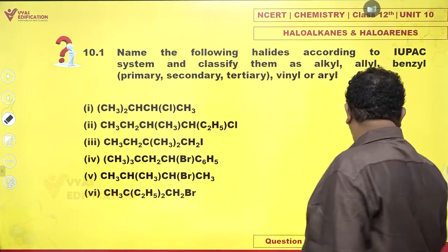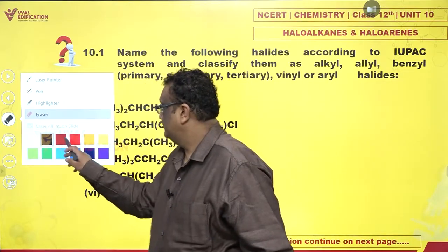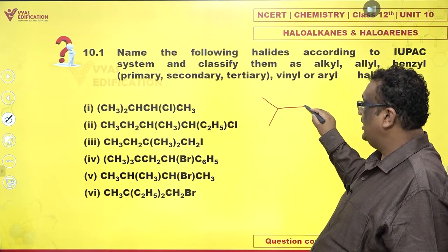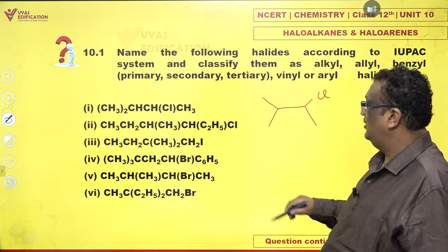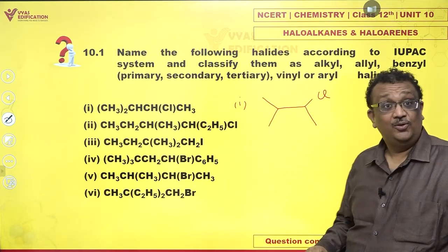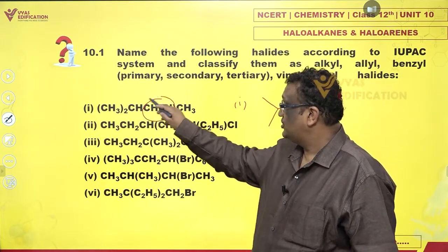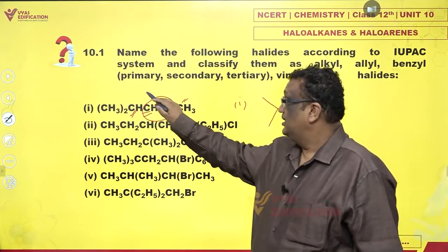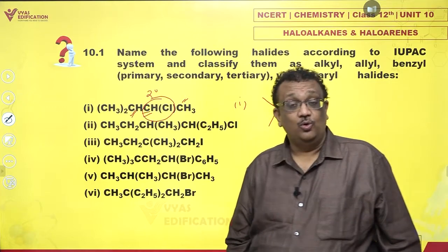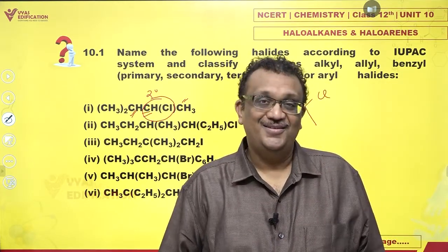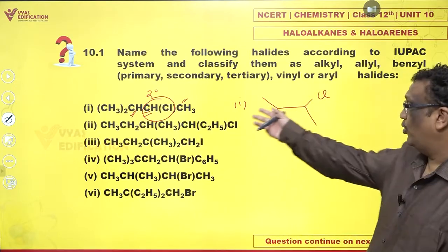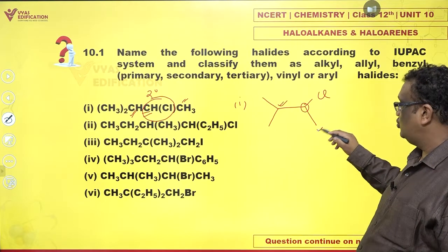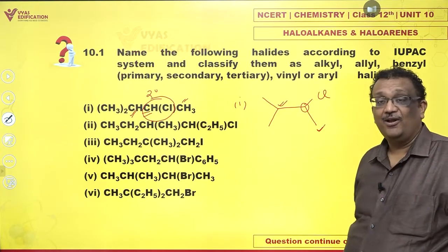Let us take a look at the very first one. We have (CH3)2CH-CH(Cl)-CH3. Can you see that this chlorine is attached to a carbon that is attached to two other carbon atoms? This is a secondary carbon atom, so the chloride is also a secondary chloride. Looking at the bond line notation, this carbon is attached to two other carbon atoms — this is a secondary halide.